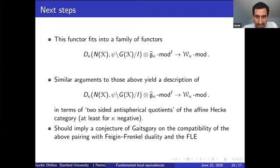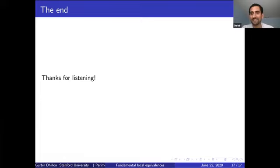Once you do this, you can give a very concrete description of the resulting pairing between Whittaker D-modules on the flag manifold and category O for the affine algebra. On each side of the tensor product, you have a one-sided antispherical quotient of the affine Hecke category. When you tensor them over the affine Hecke category, you get a two-sided antispherical quotient, which is exactly the same as a block of the corresponding W-modules. This gives a fairly comprehensive answer to how to calculate what Drinfeld-Sokolov reduction does to category O. An expected application is it should imply a recent conjecture of Gaitsgory on the compatibility of this pairing with Feigin-Frenkel duality for W-algebras and the FLE. That's all I had, thank you for listening.